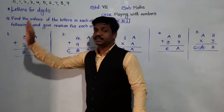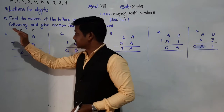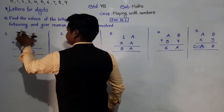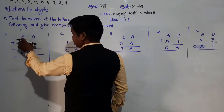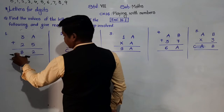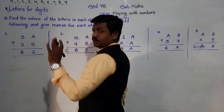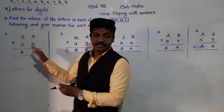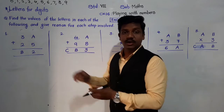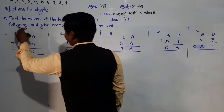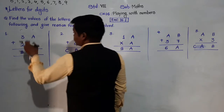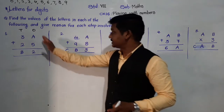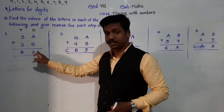Now let's solve the first example in exercise 16.1. The example is: 3A + 25 = B2. They have given the addition, but some digits are missing, replaced by alphabets, and we have to find values for these alphabets. As usual, let's first solve the 1's place: A + 5 equals 2 in the answer.